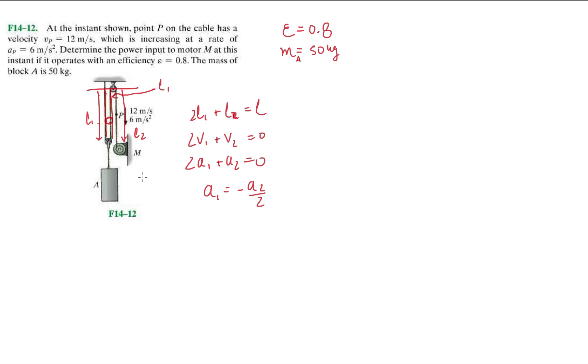My coordinate system, my default coordinate system is always this one. When I plug in the value for A2, which is 6 meters per second squared, I'm given that my V2 is minus 12 meters per second and my A2 is minus 6 meters per second squared.